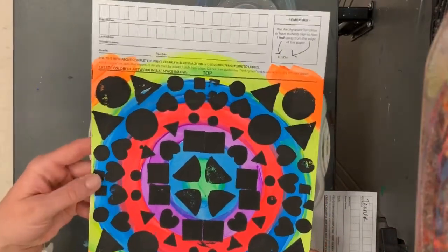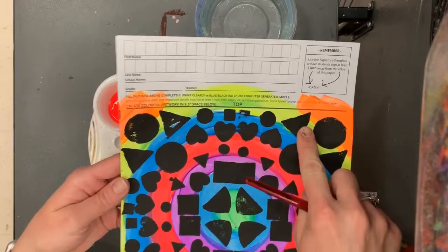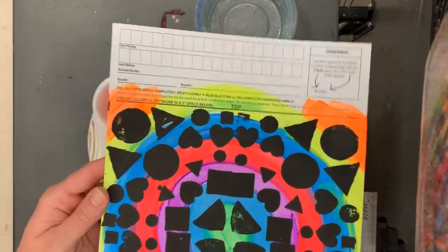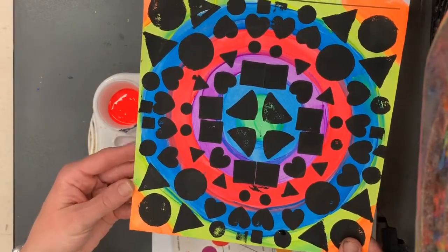You can see that when I did it, my colors bump into one another and I don't have white space between my circles.